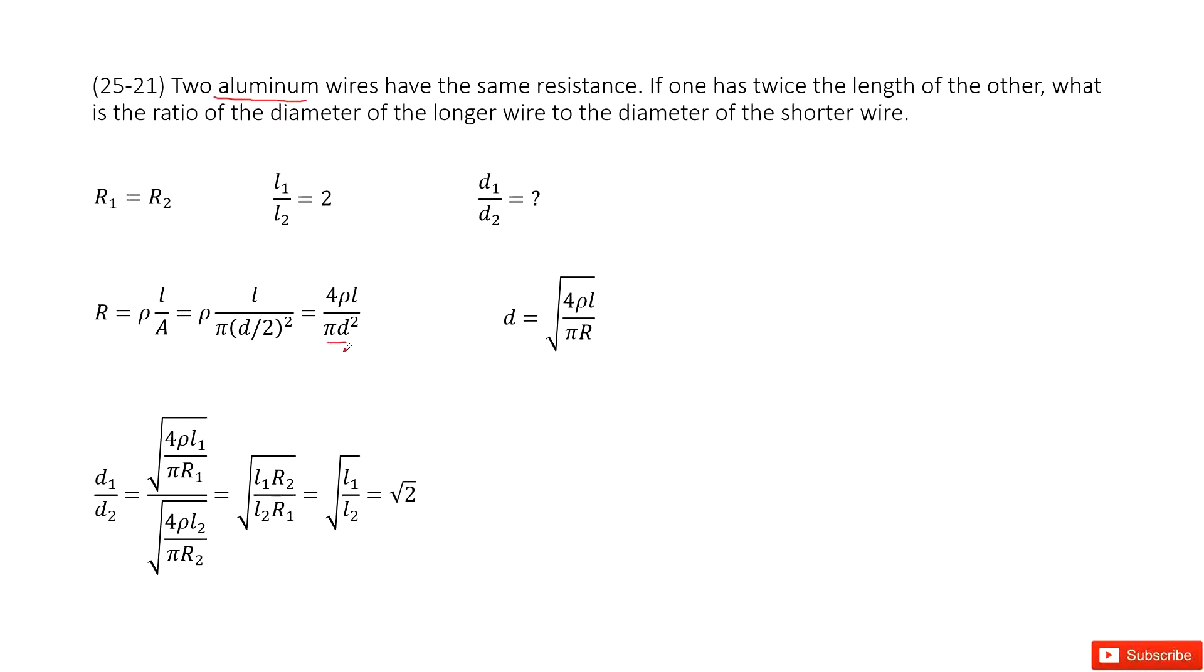Now we need to find the ratio of the diameters. Very straightforward, we can get the function for diameter from this equation R equals this term. When you solve it, you get the function for D.